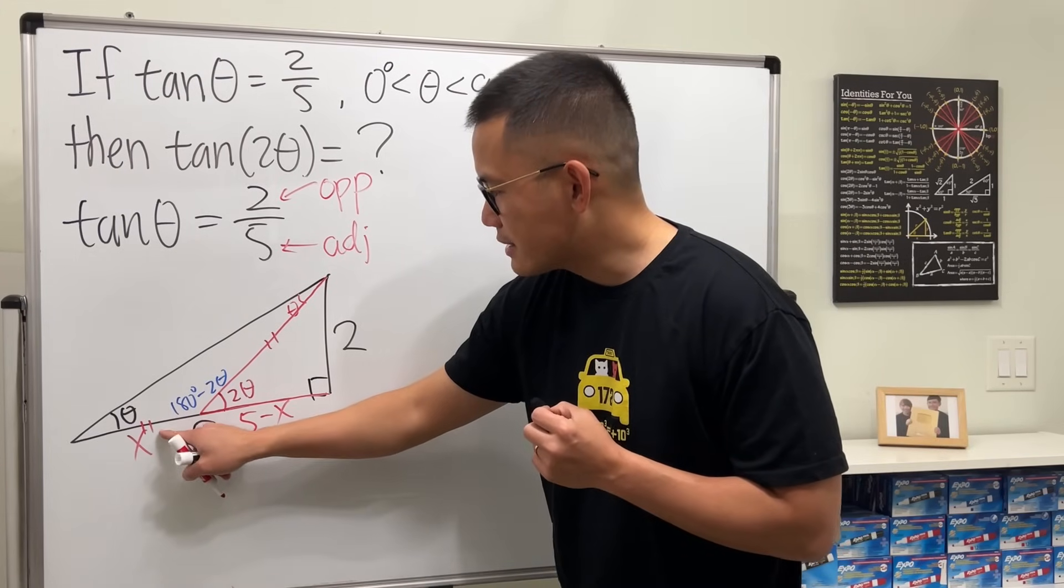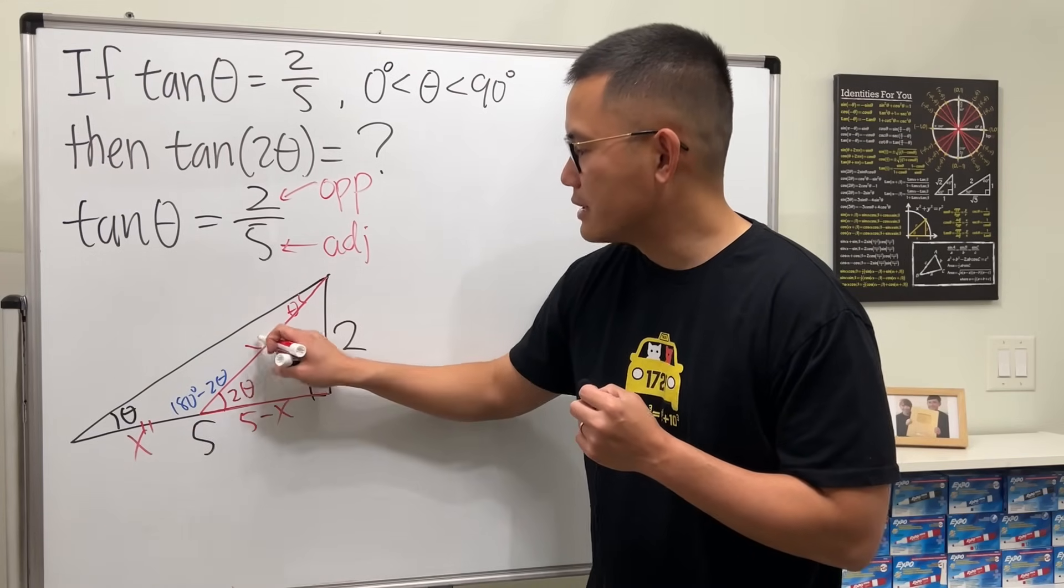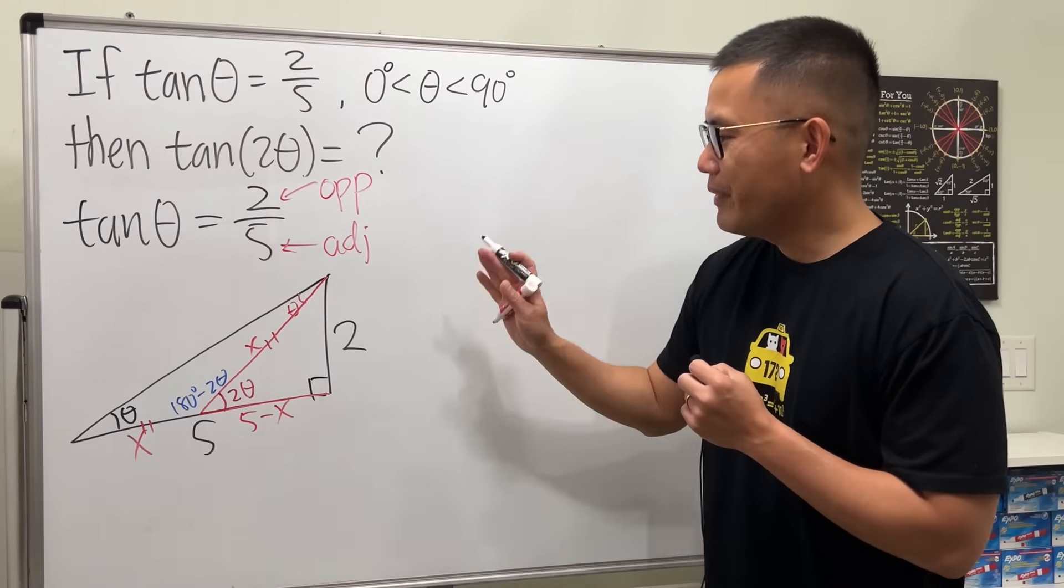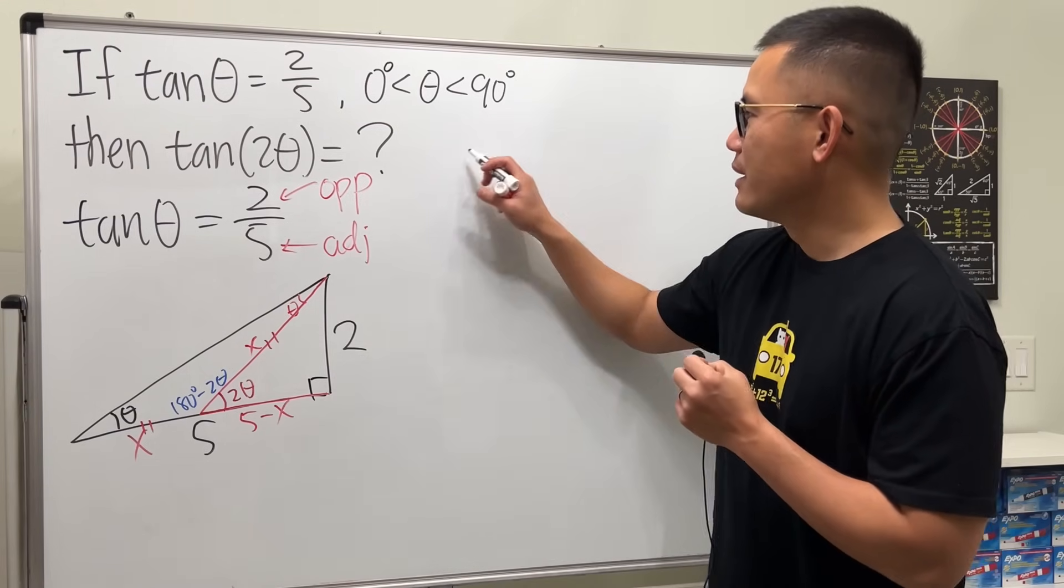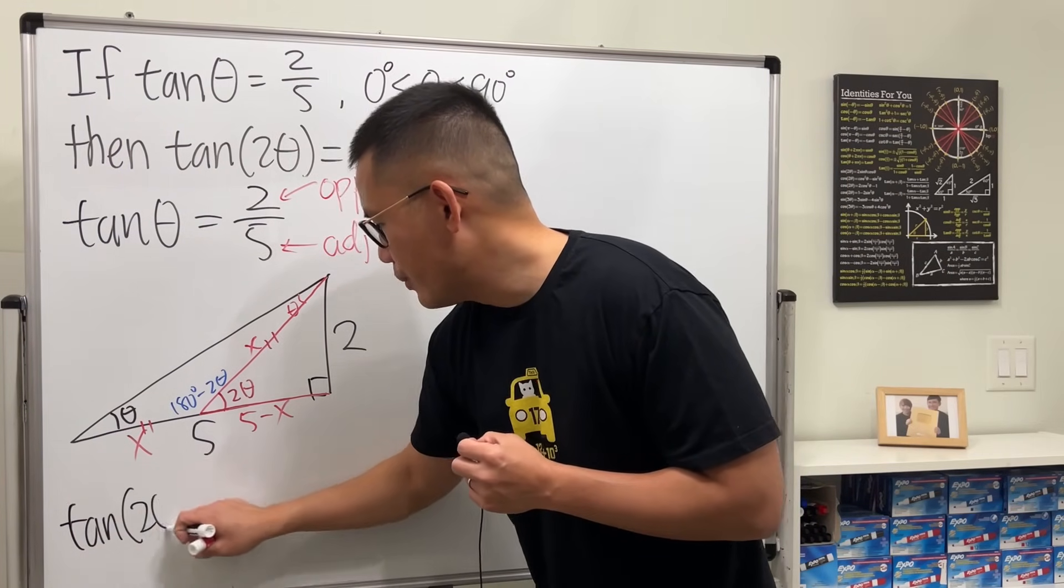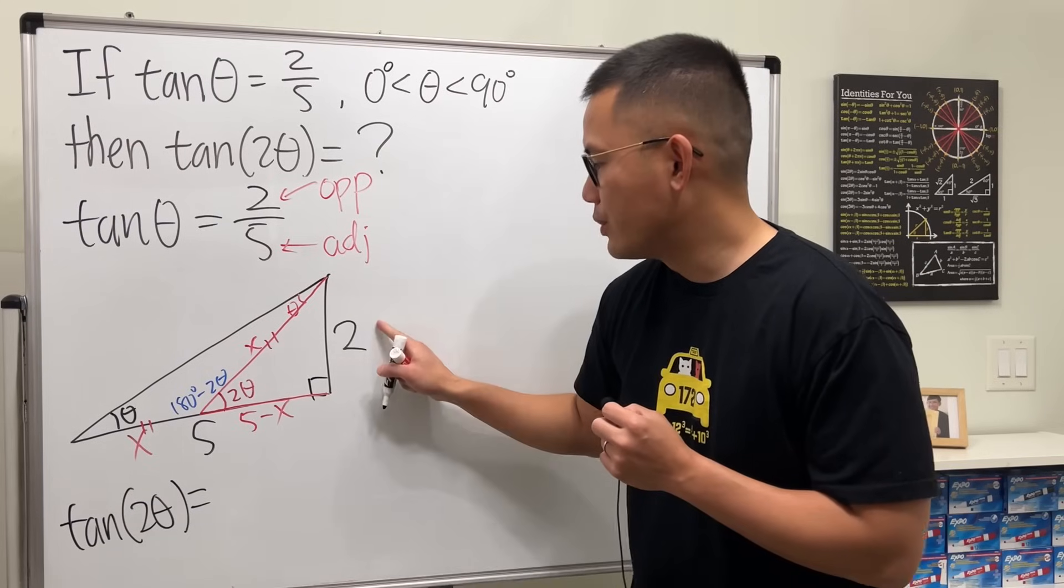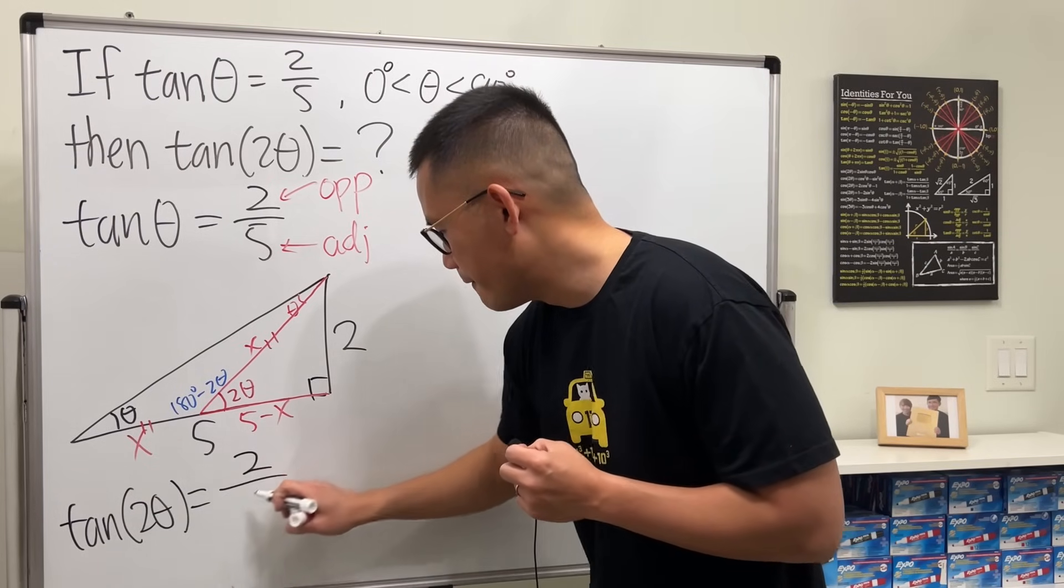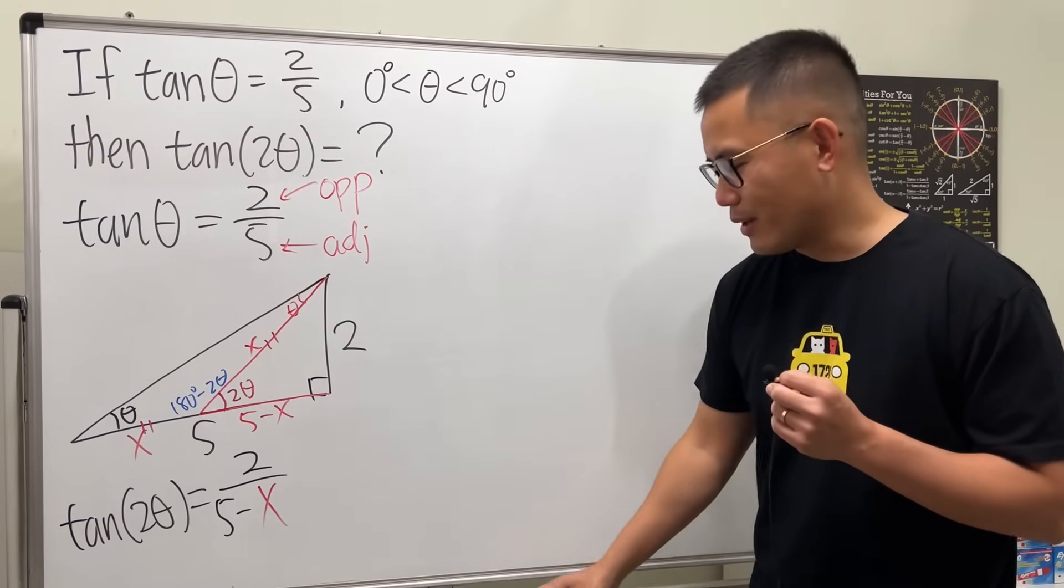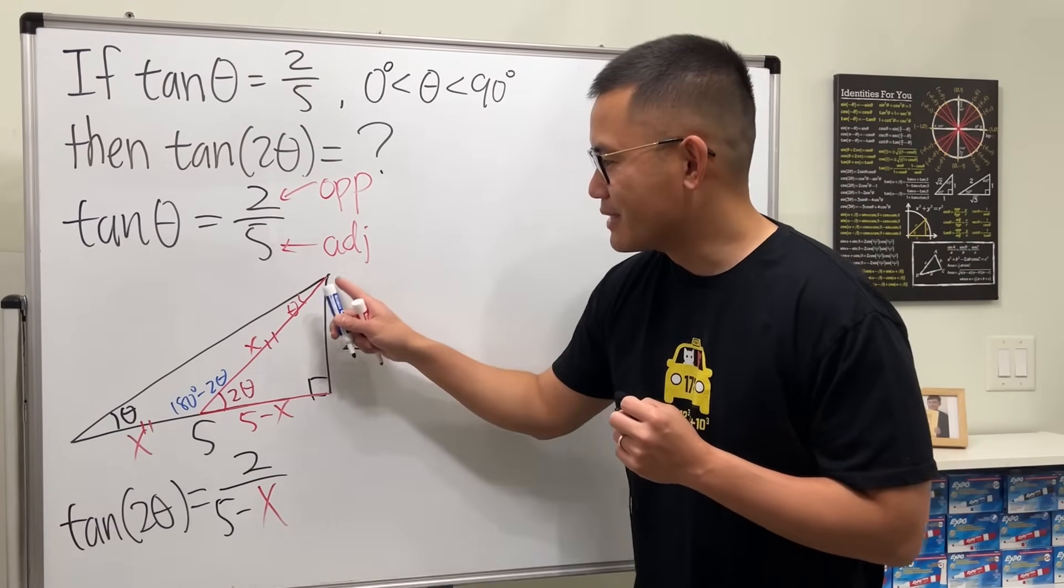Now since this is x, these two sides are equal, so this side will also be x. Pretty cool, huh? So as you can see, if you look at this right here, tan(2θ) will simply be 2 over 5 minus x.